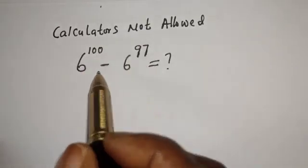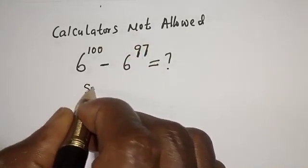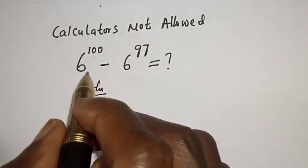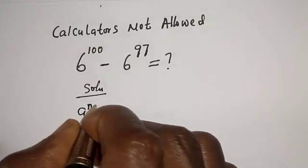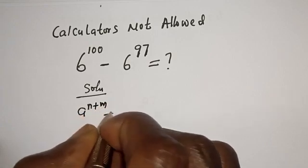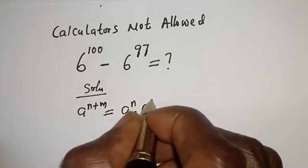Calculators not allowed. Solution: If you have a raised to power n plus m, this is equal to a raised to power n multiplied by a raised to power m.